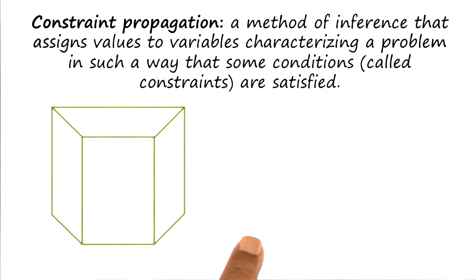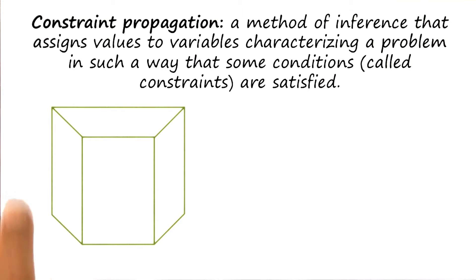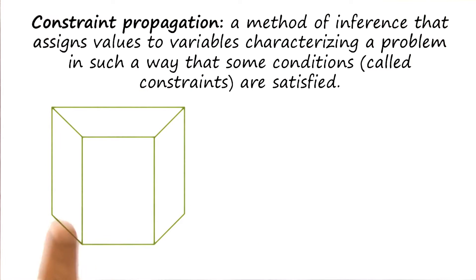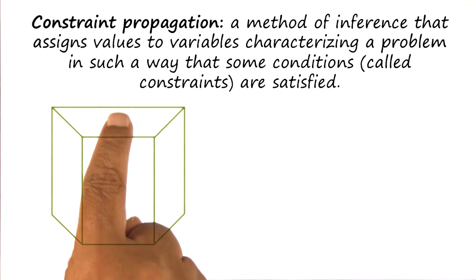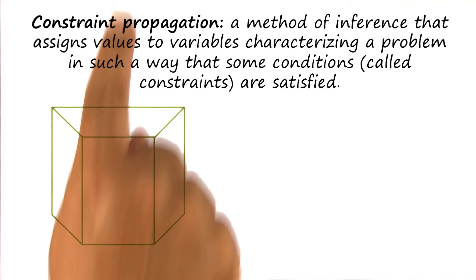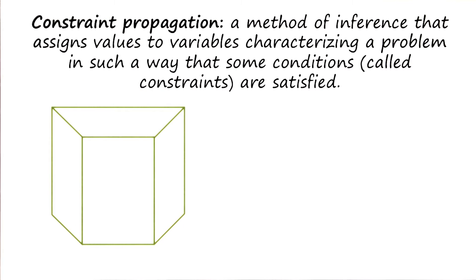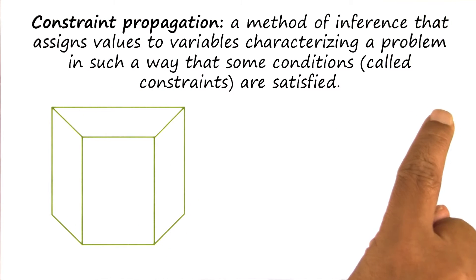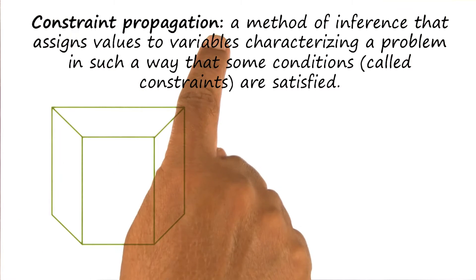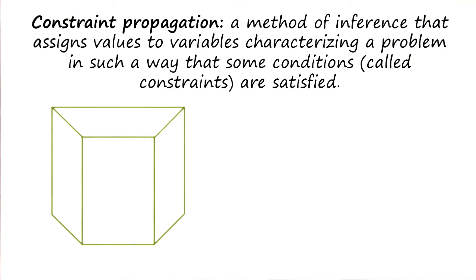As an example, let us return to this figure. Here is a figure drawn on a 2D surface, and the problem is whether or not it represents a 3D object. The variables here are the surfaces and the orientations. One could consider this to be a single two-dimensional surface with some lines drawn on it. Alternatively, one can think of this as having four surfaces — one, two, three, four — where each surface has a particular orientation, which can be specified by the perpendicular to that surface. The method of constraint propagation is going to help identify the surfaces and their orientations.